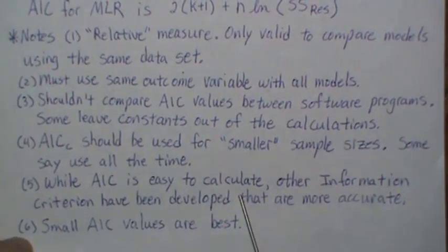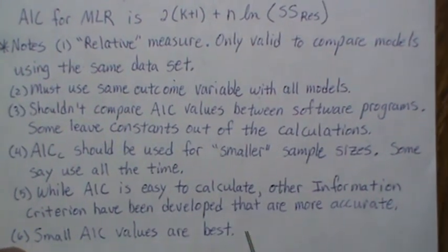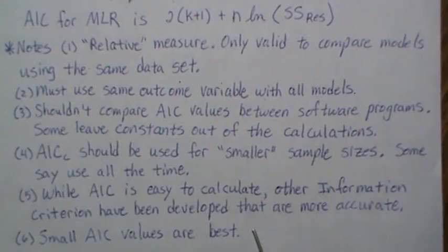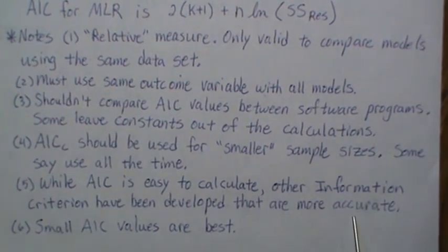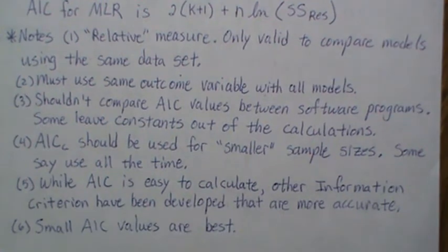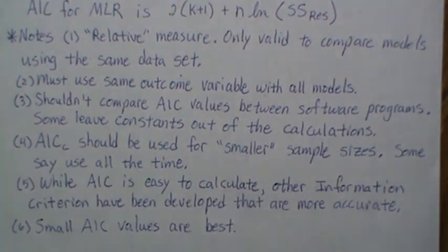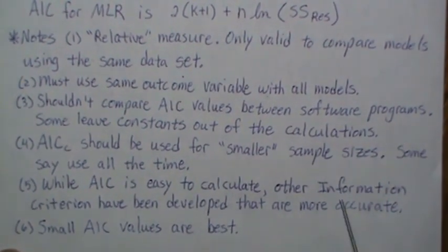While AIC is easy to calculate, other information criteria have been developed since I took my statistics course a long time ago, and they claim they're more accurate. Of course they're more computer and calculation intensive, but they're considered more accurate. If you want, you can do more research in that area.